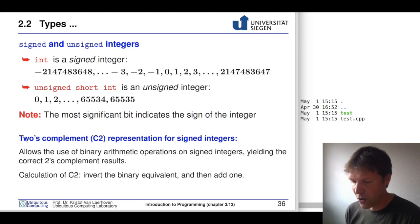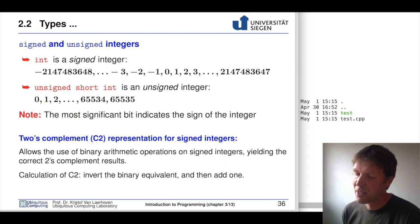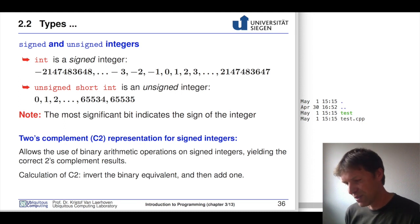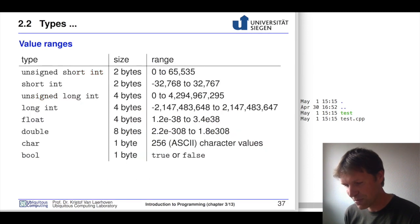This is called two's complement representation for integers. This is something you don't have to know for this course — it's going a bit too far — but it will be part of a follow-up course.